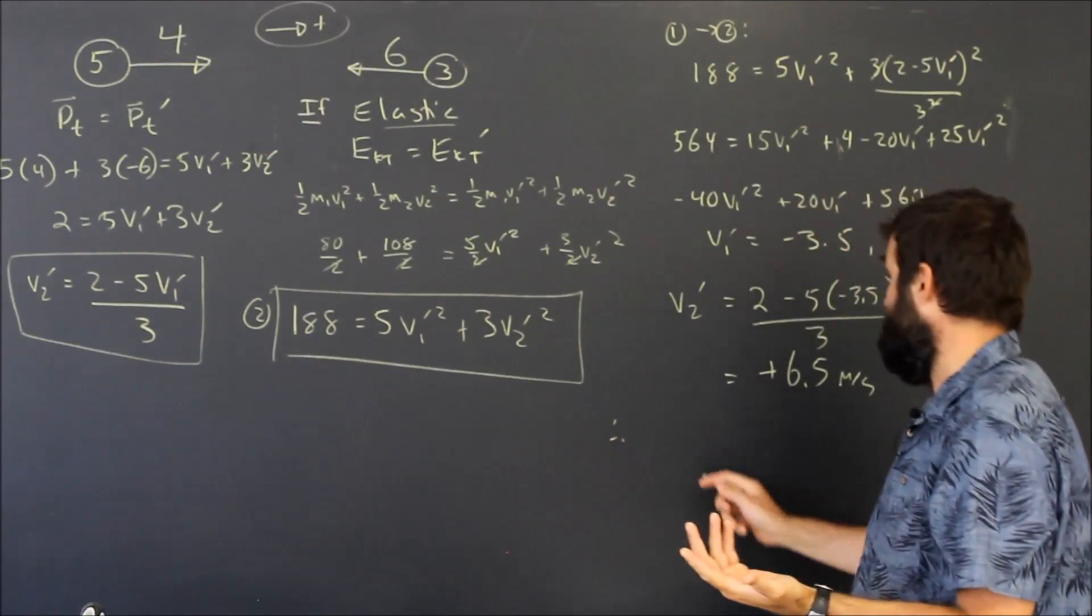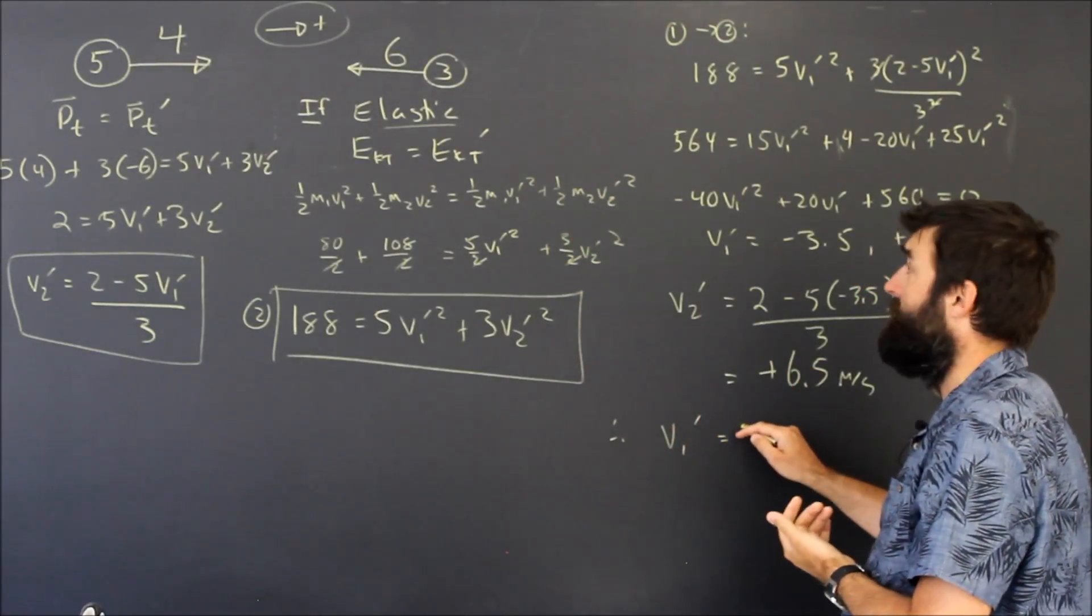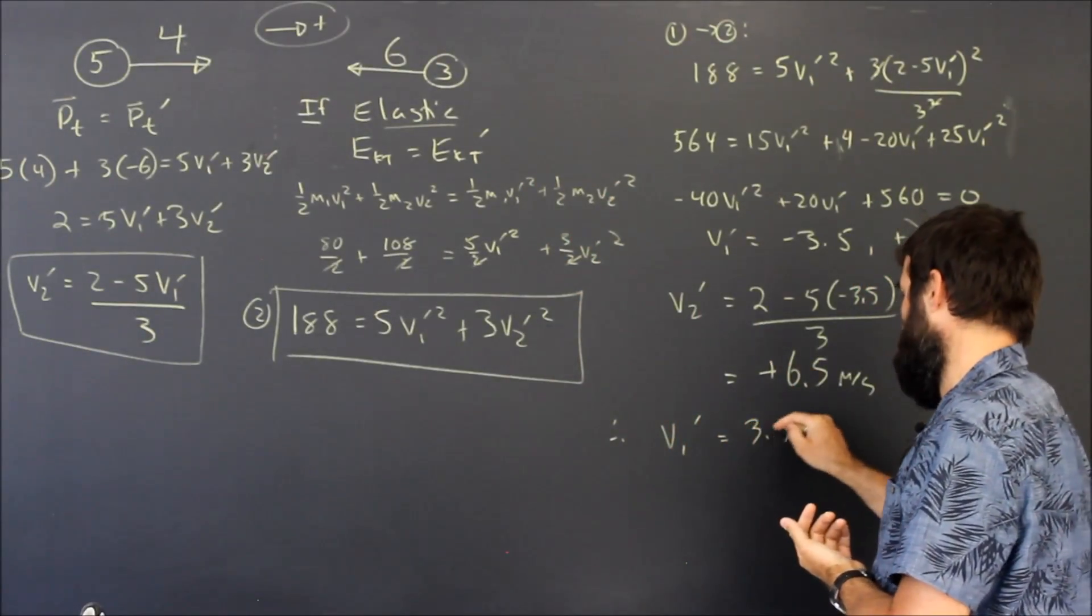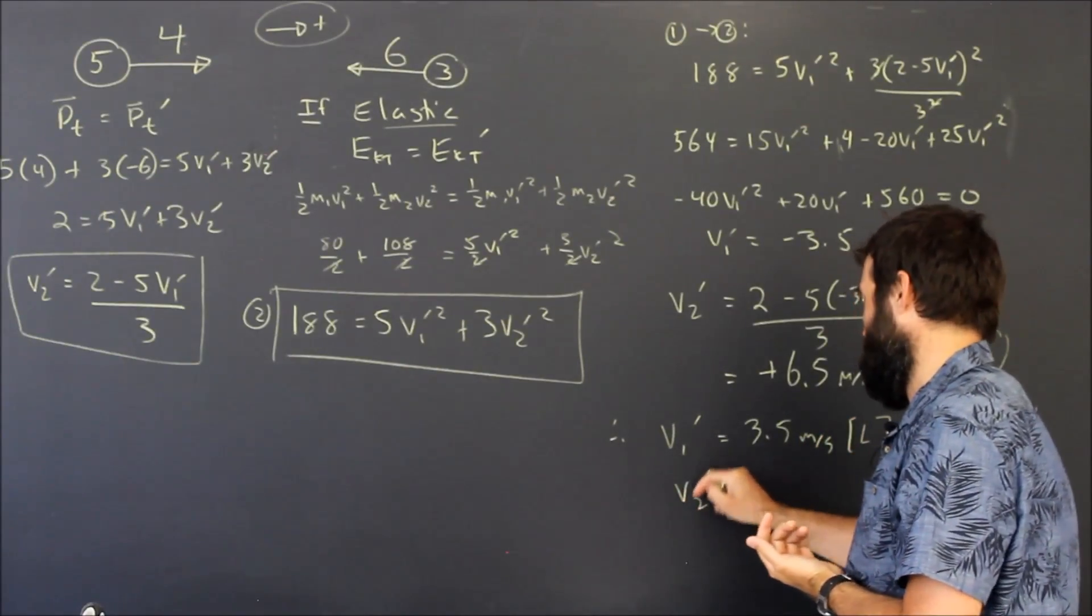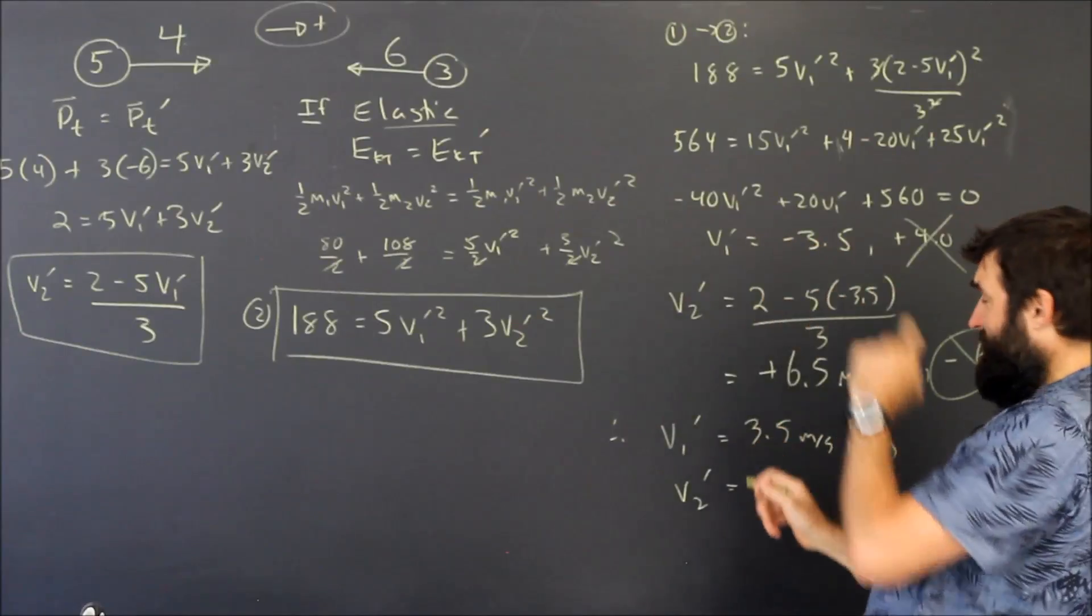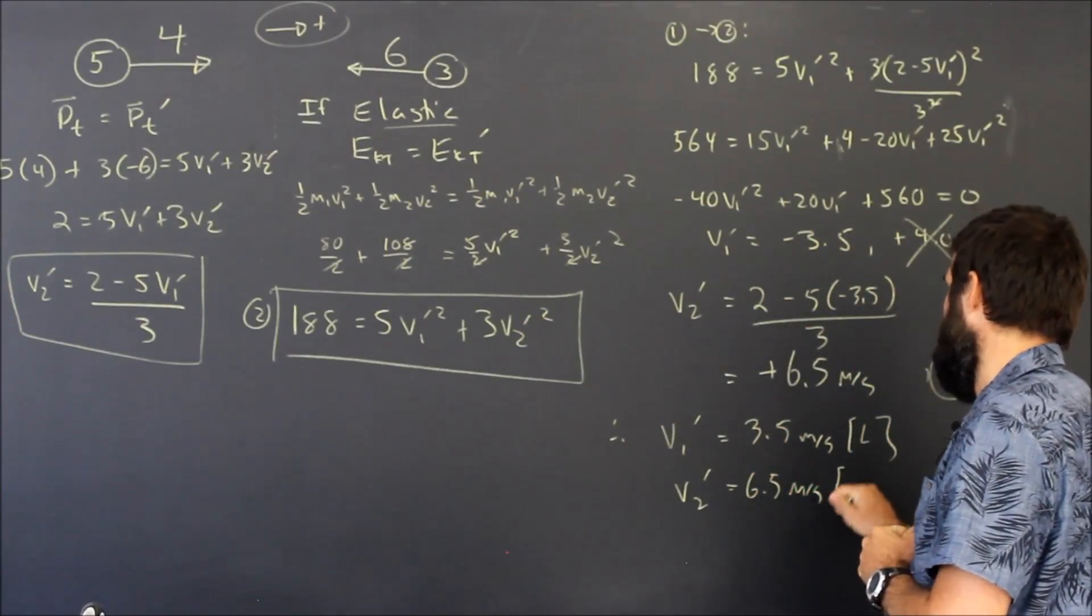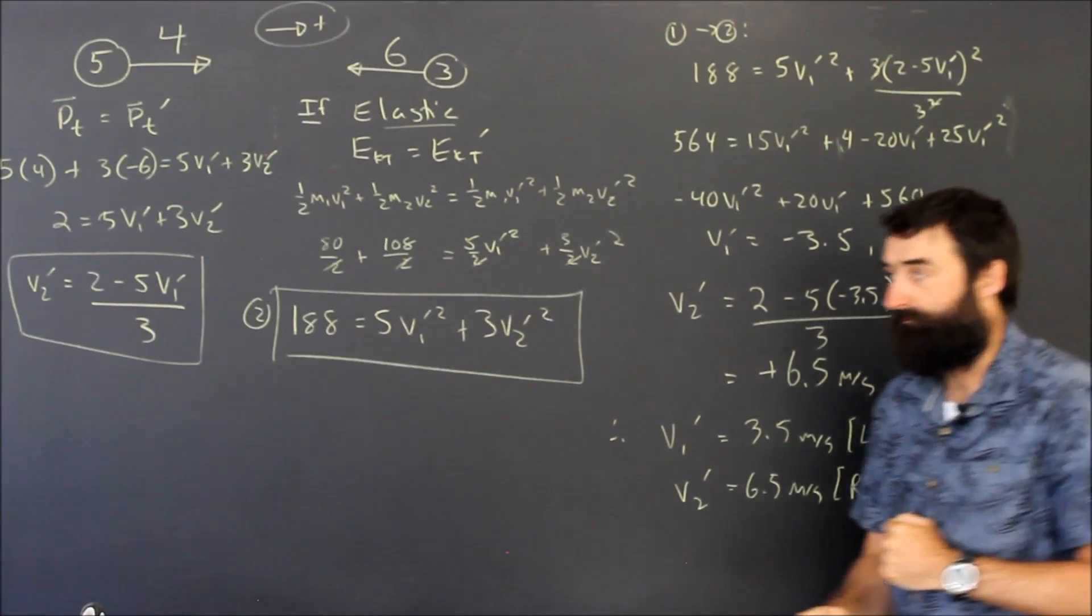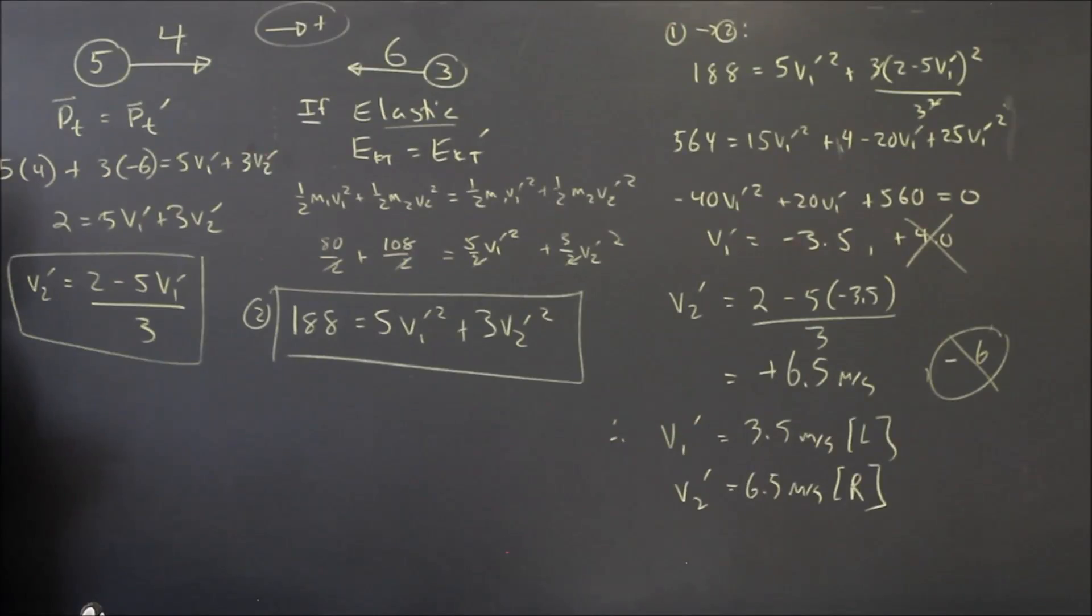So therefore I just make my little sentence here and I'm just to say the velocity of the five kilogram afterwards is going to be 3.5 meters per second to the left. Negative is not really a direction. And the three kilogram object is going to end up going at 6.5 meters per second to the right. I think I'm done.